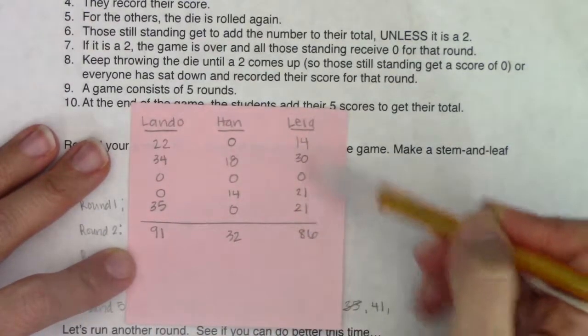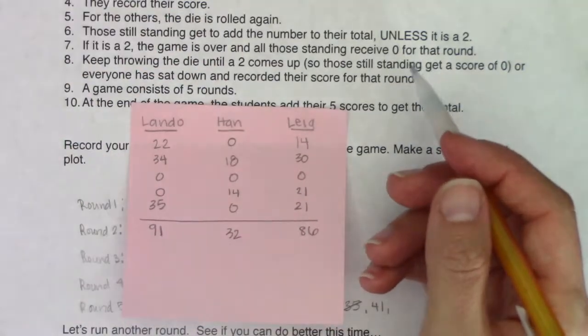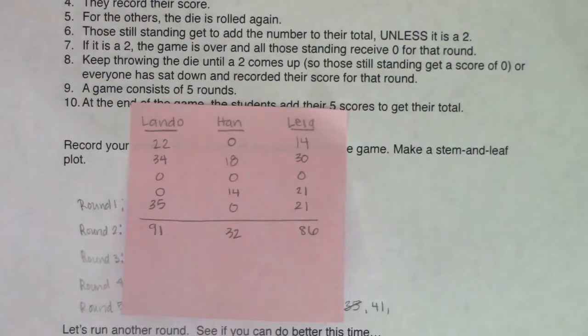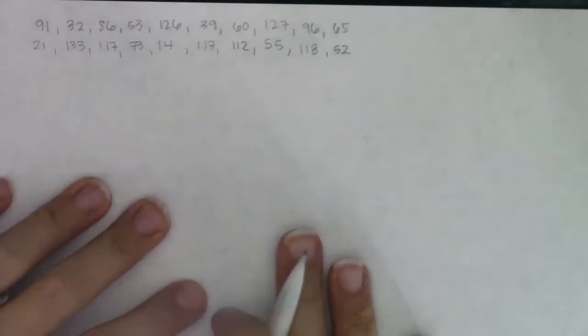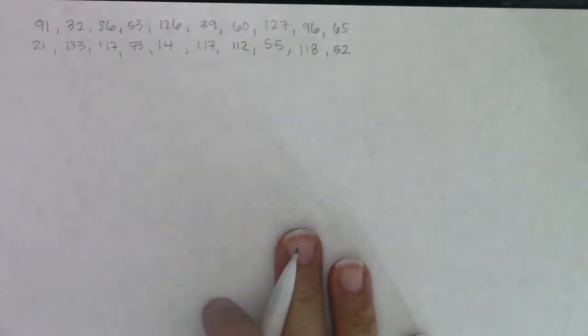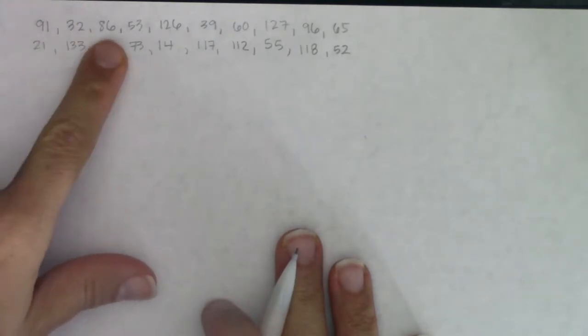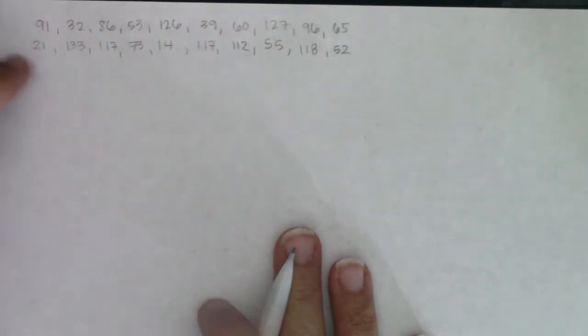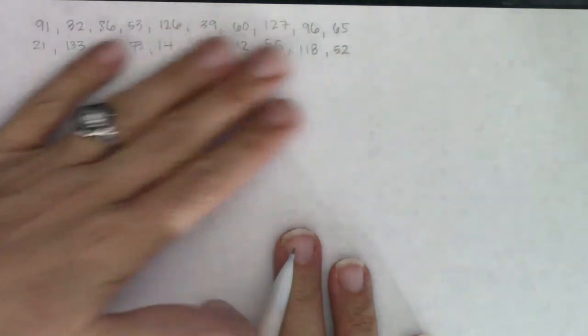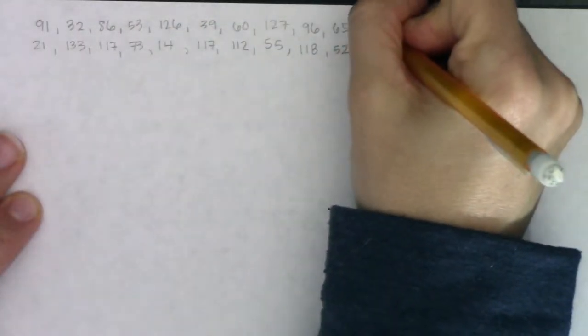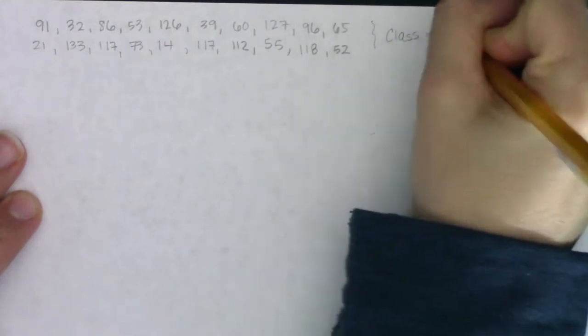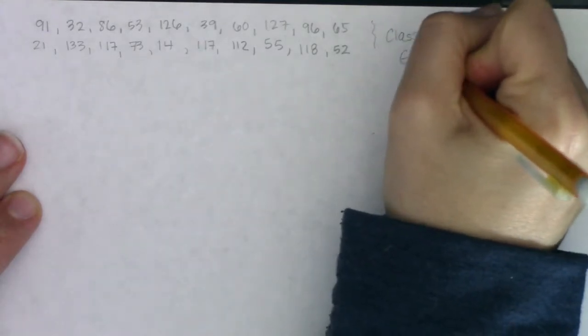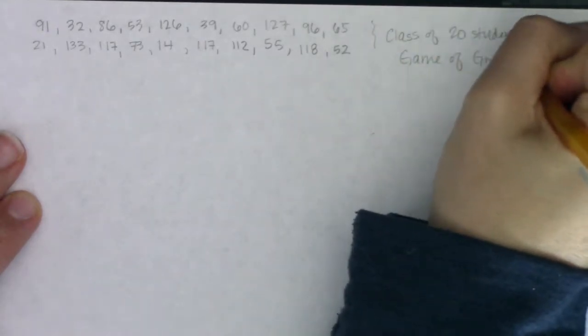So in a moment, when we go to the next page, I'm going to fake like I had a whole bunch of other student data. And then I want you to watch me make a stem and leaf plot in real time. All right. So I want to show you what it's like to draw a stem and leaf plot in real time. We have Lando, Han, and Leia's scores. And then I just faked. I really actually used my random number generator to get 17 more student scores. So I have about a class of 20 students.